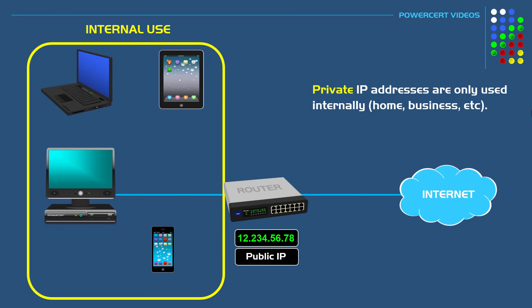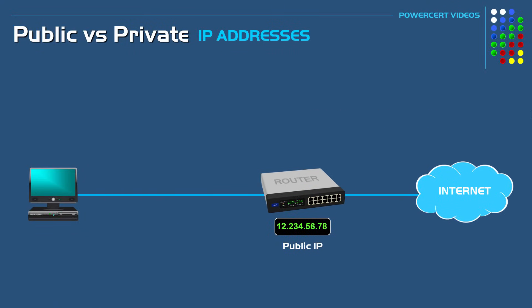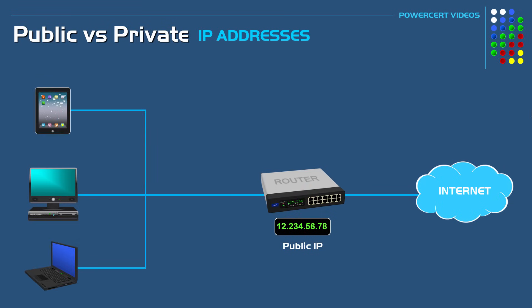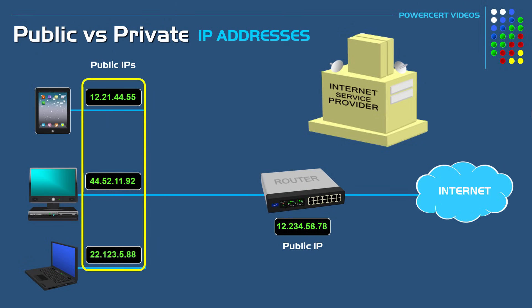A service inside your router called DHCP is what assigns your internal devices a private IP. As an example, most homes and businesses are not going to have just one device that needs internet access — chances are they're going to have multiple devices. So all of those devices would need a public IP address if they want to access the internet. You could contact your ISP and ask for additional IP addresses for all of your devices, but that's going to be more expensive, unnecessary, and a waste of public IP addresses.